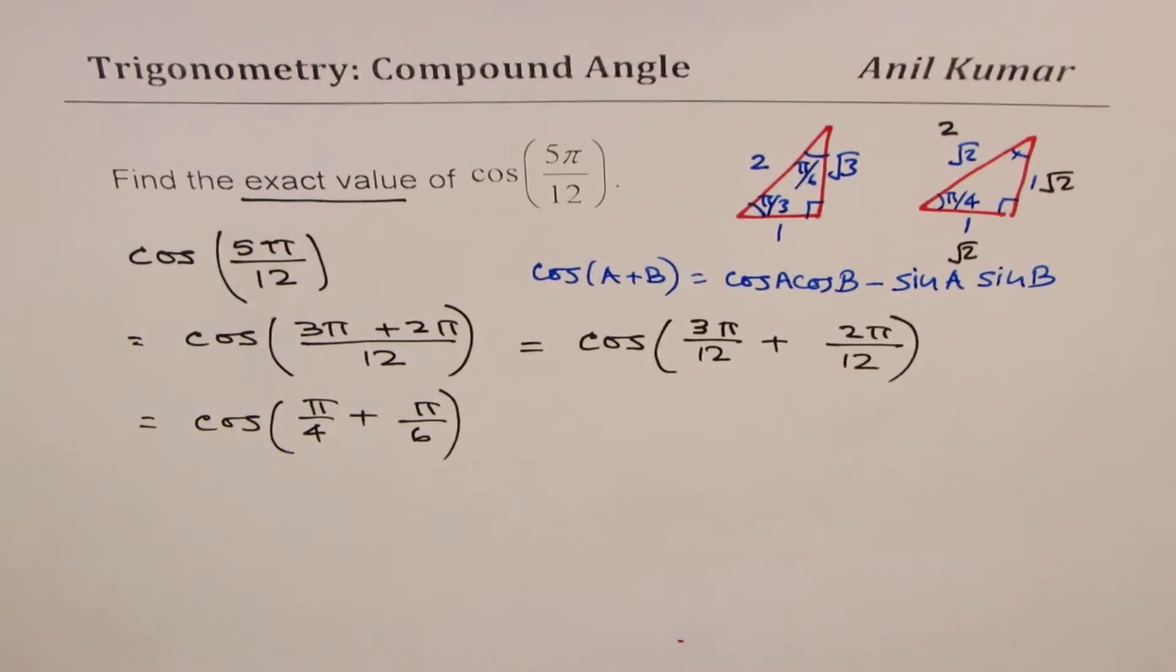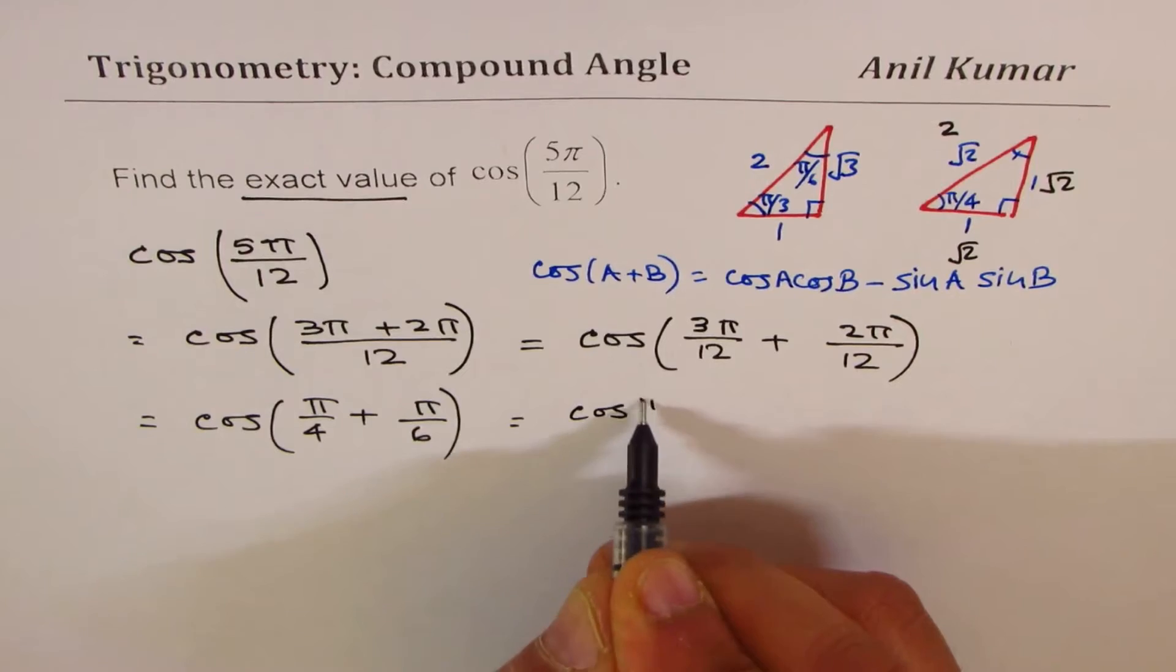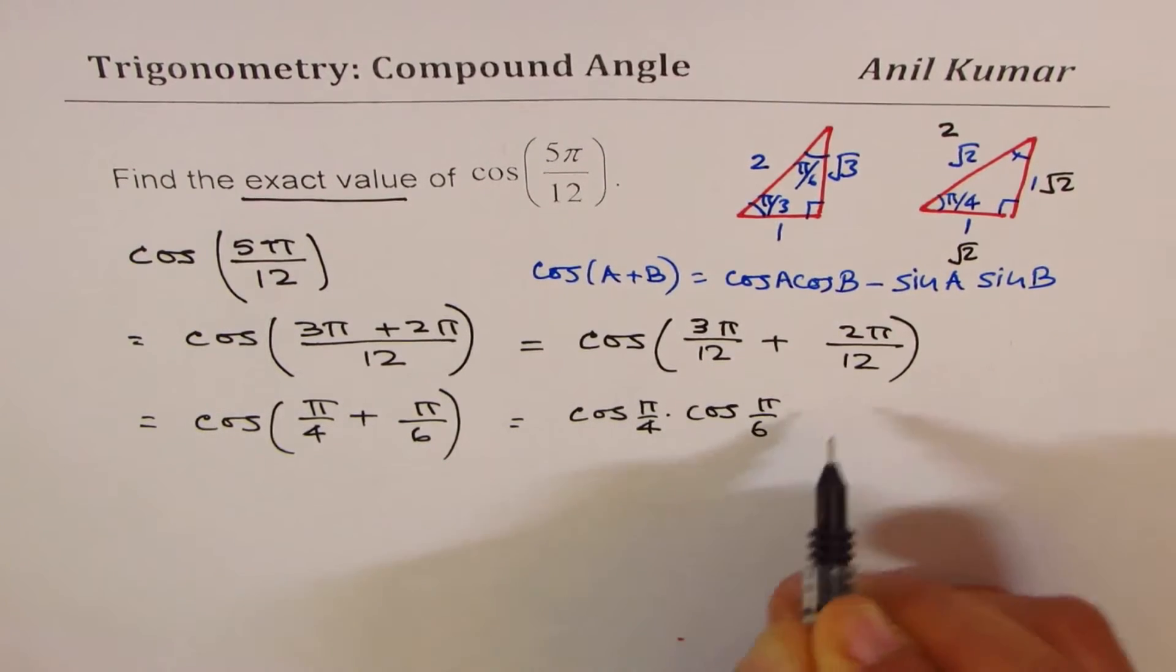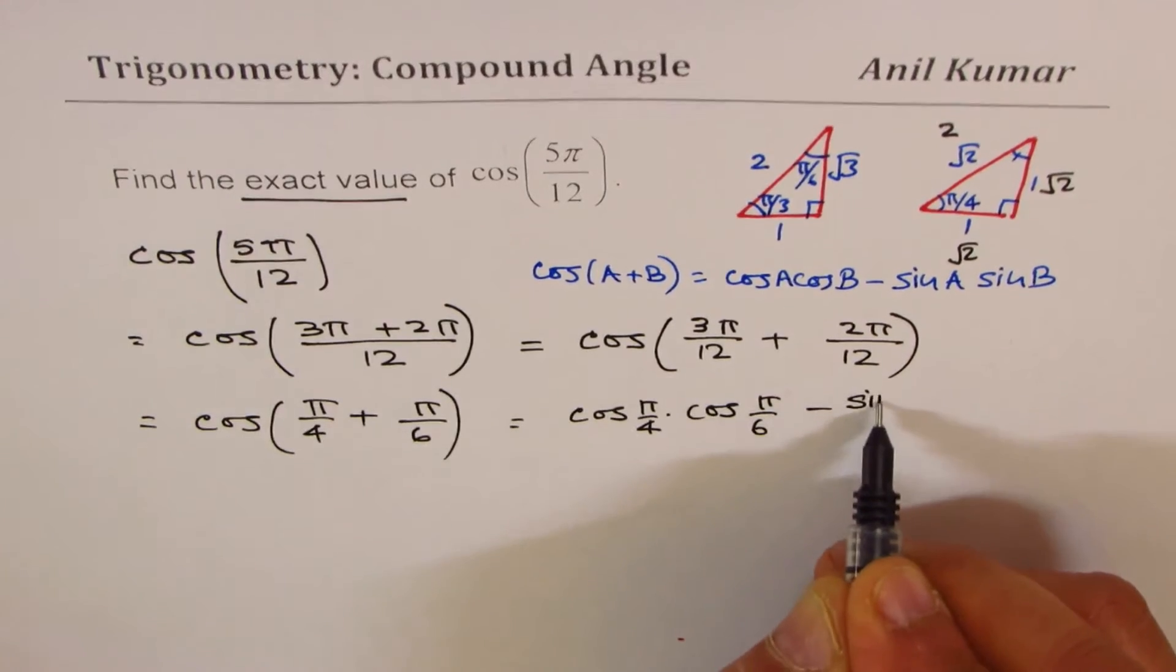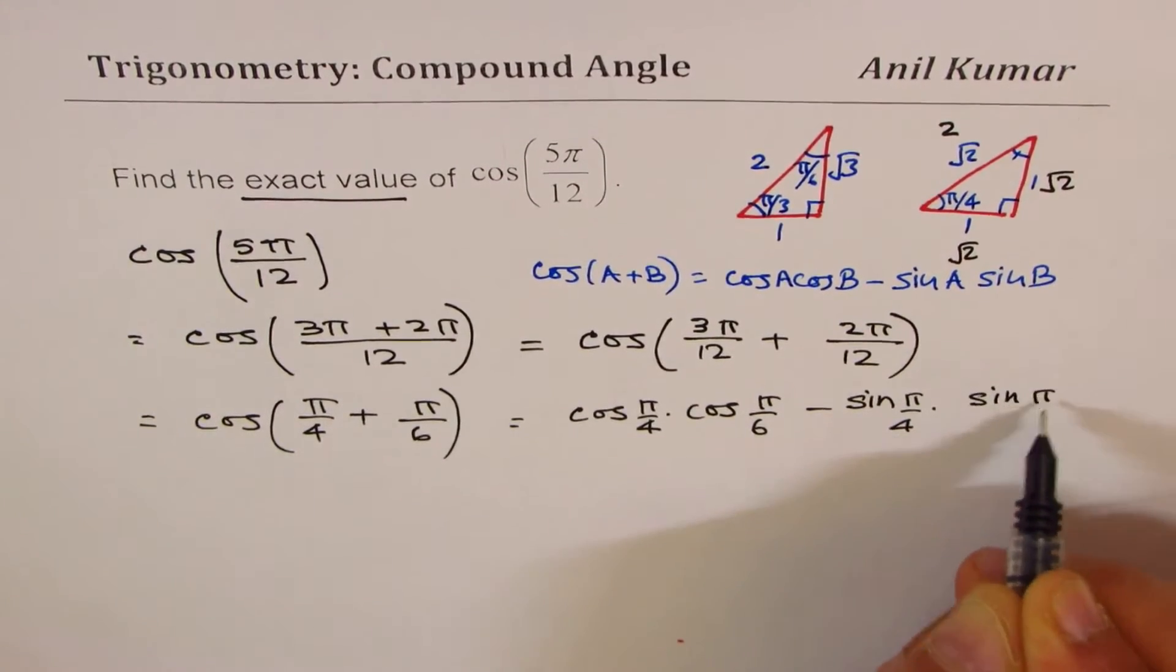So let's use this formula and expand. So when you expand you get cos(π/4) times cos(π/6) minus sin(π/4) times sin(π/6). Okay?